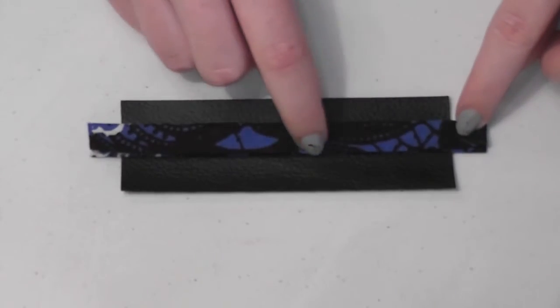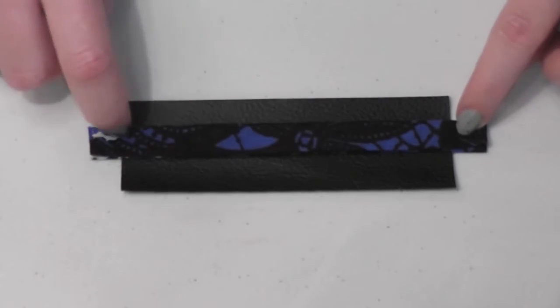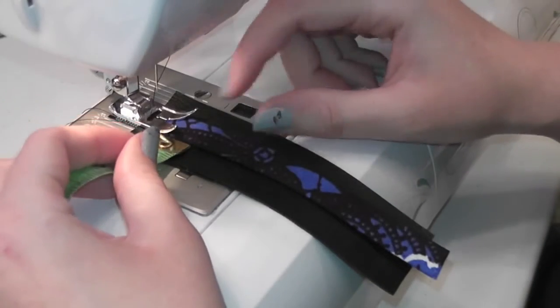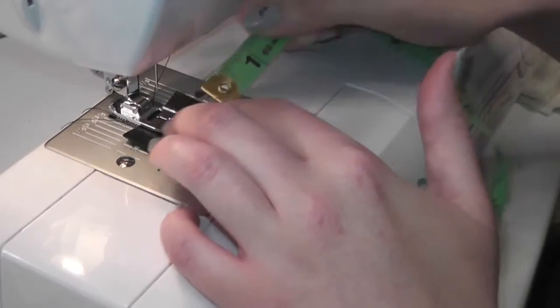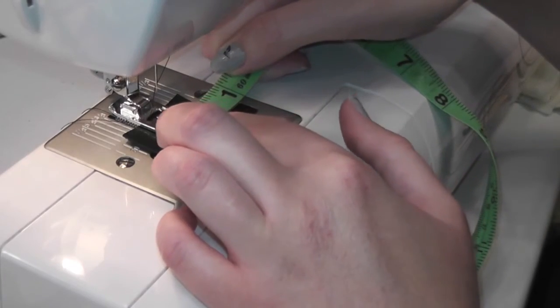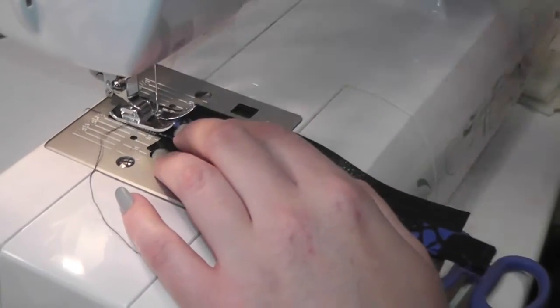Lay the fabric in the center of the pleather and topstitch close to both edges of the decorative fabric. Double check that everything's centered and start sewing at the top of the accent fabric, backstitching at the beginning and end.